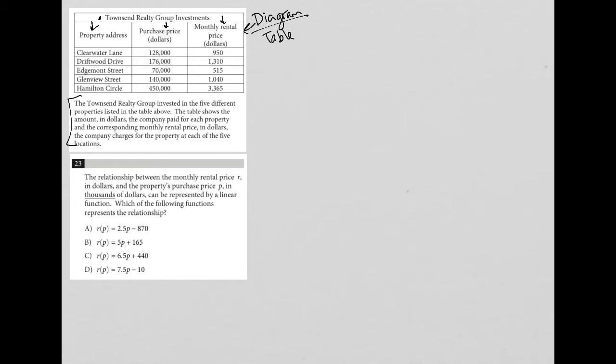The information here says the Townsend Realty Group invested in the five different properties listed in the table above. The table shows the amount in dollars the company paid for each property and the corresponding monthly rental price in dollars the company charges for the property at each of the five locations. I'm going to say that there was no additional value given by reading that. We pretty much can see everything in the table.